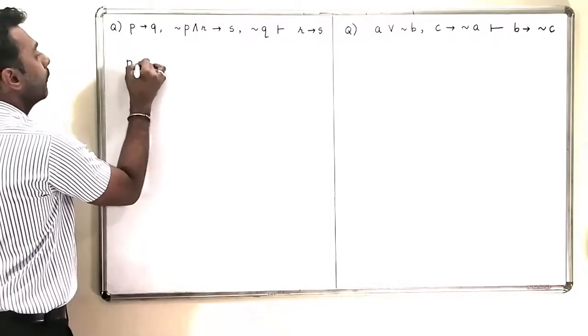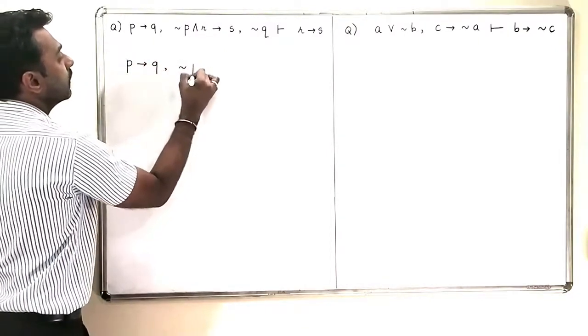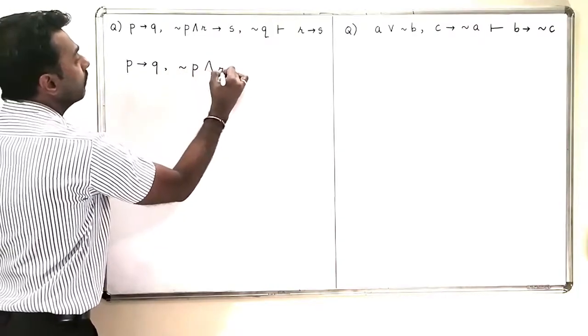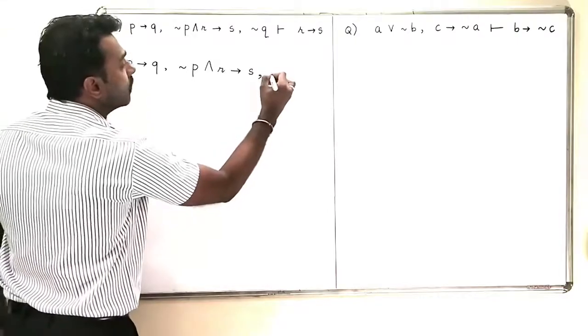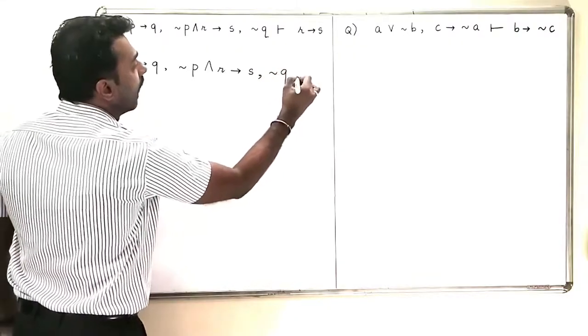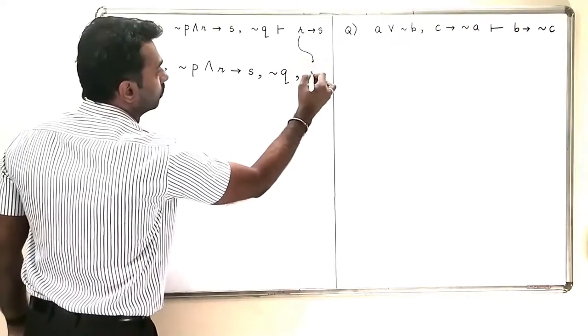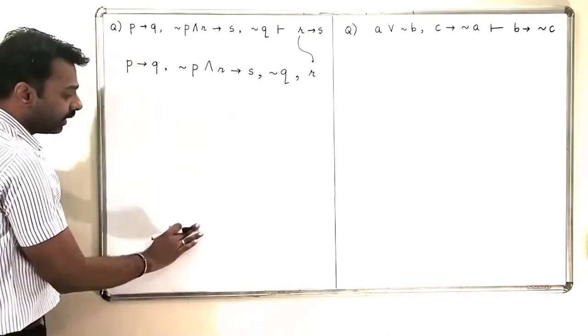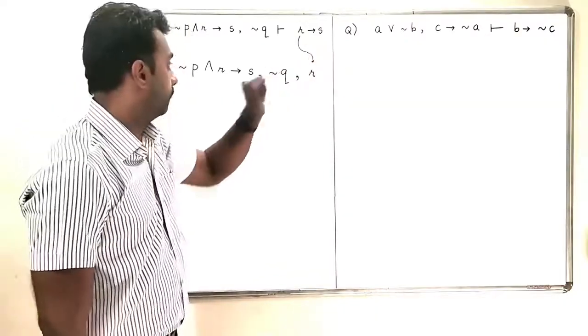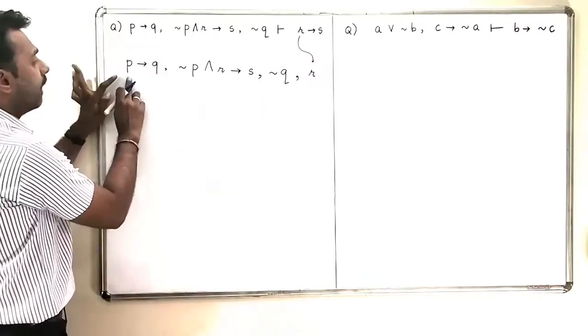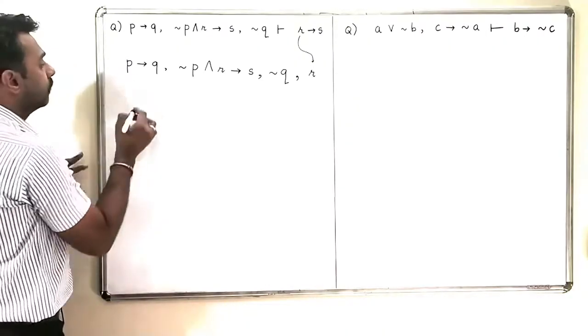So, P implies Q. Second is negation P and R implies S, negation Q, and I am going to take this R also. And now I will simplify and try to see whether it comes up to be S or not. So, first of all, I will make this particular thing.